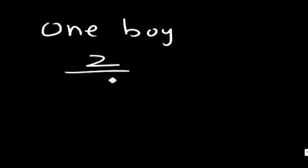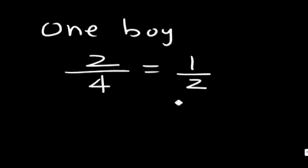For having one boy, there are two outcomes out of the four possible outcomes, which is 0.5. Numerically, the answer is 0.5.